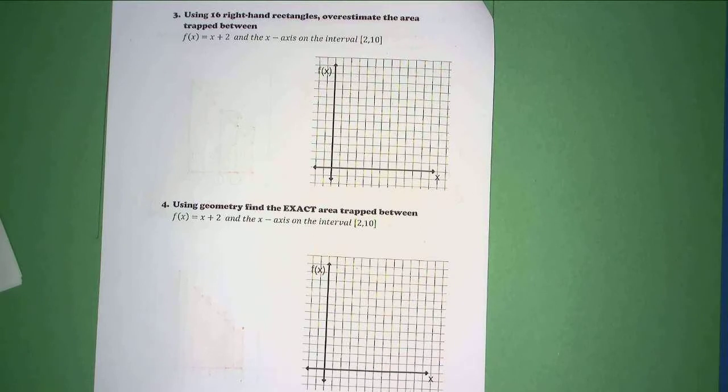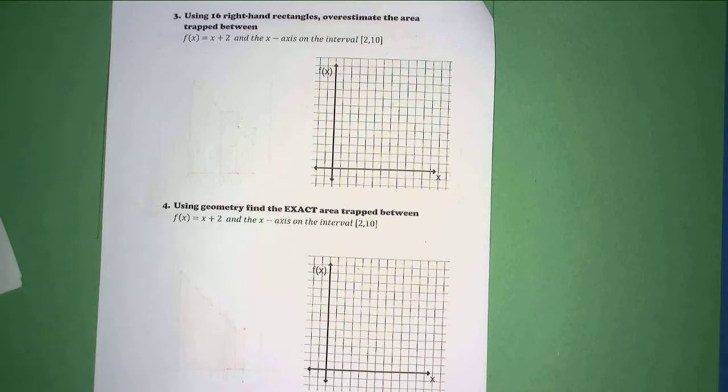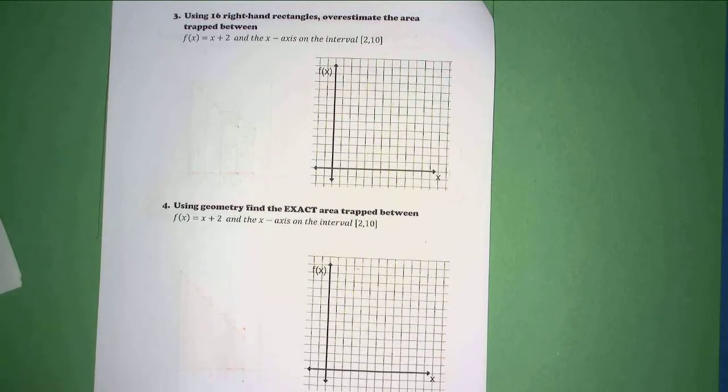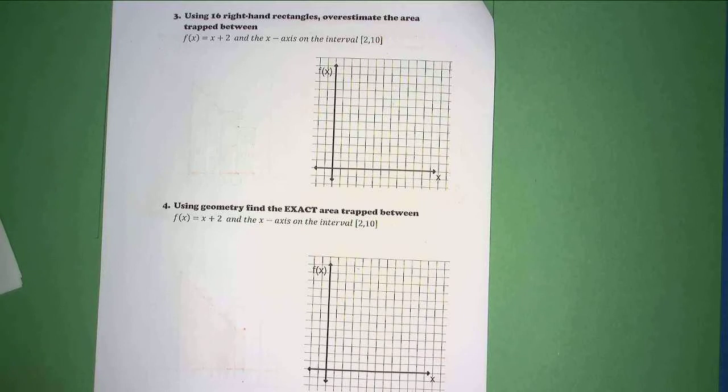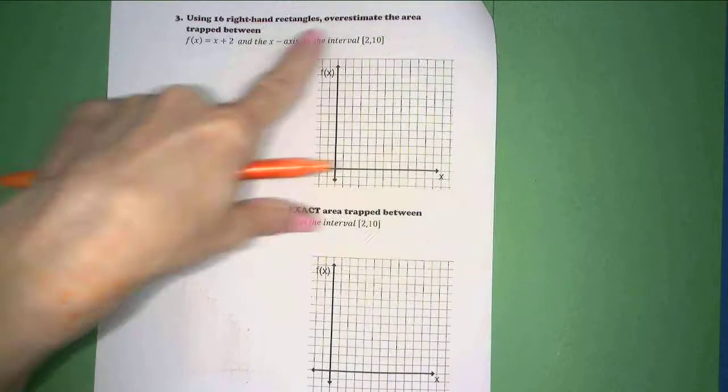Today, we're going to continue on with numbers 3 and 4. So let's take a look at what number 3 is asking us to do. Using 16 right-hand rectangles, we're supposed to overestimate the area trapped between that function we've been working with and the x-axis from 2 to 10.